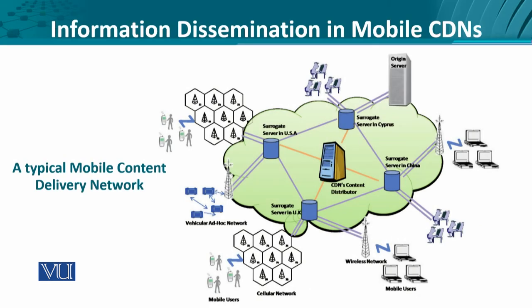Let's look at a typical mobile content delivery network. On the top right, we have the origin server. This origin server is being supported through surrogates. These surrogates are distributed across Europe, Asia, and the US, and they are providing localized coverage to different wired and wireless infrastructures.